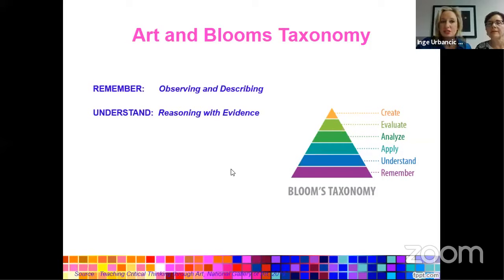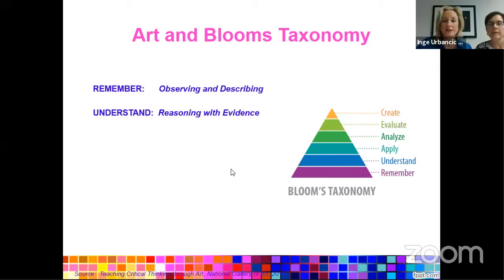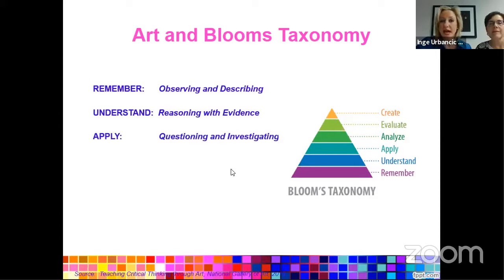Then at the understanding stage, we ask them why — let's reason with evidence. For example, looking at a Monet impressionistic painting, you see something that looks like a tree. Why do you think that's a tree? Give your reasoning. Maybe they'll say it's a little abstract but there is some brown at the bottom with branches. Moving on to application, we have them question and investigate more: why do you think that's a tree? What's happening there? We can compare and connect — what does this painting relate to its time period in history? Why was the artist creating something like this?